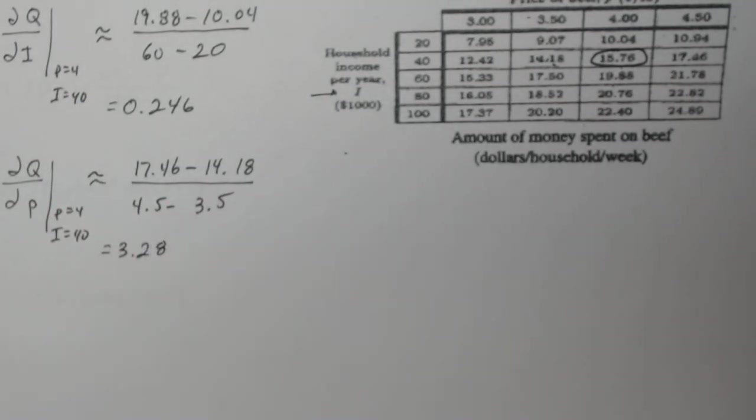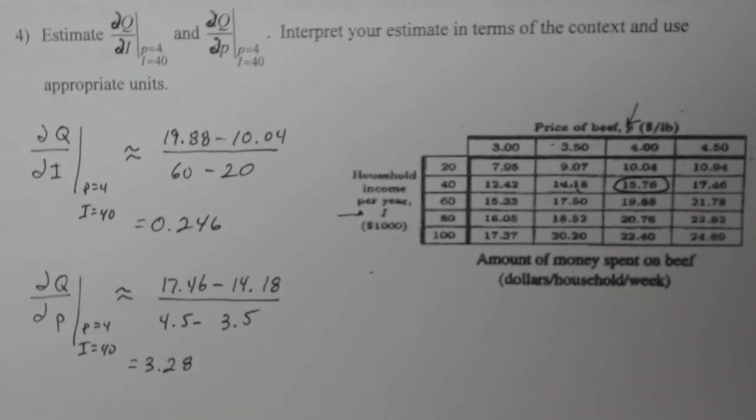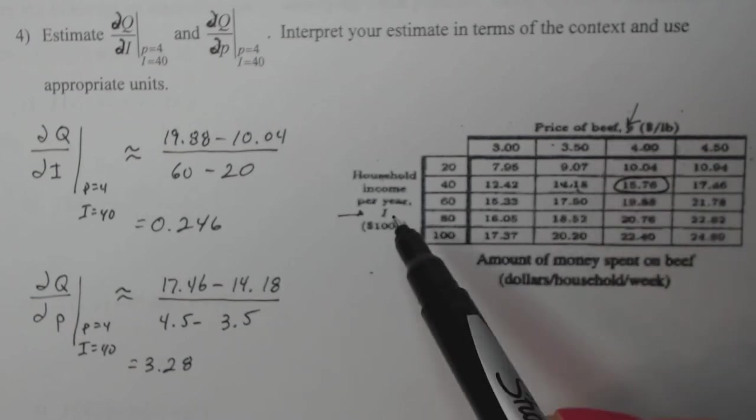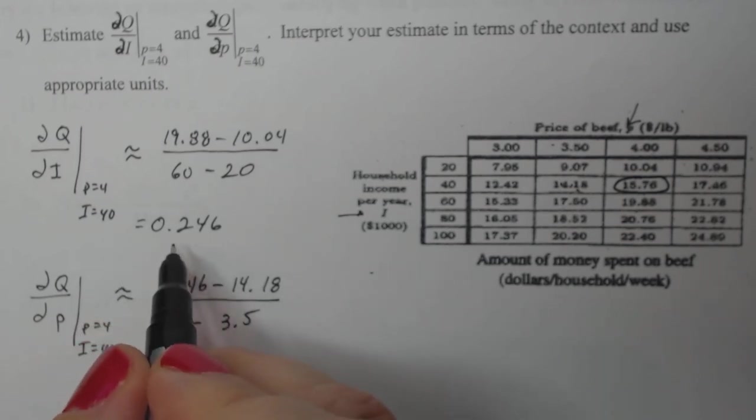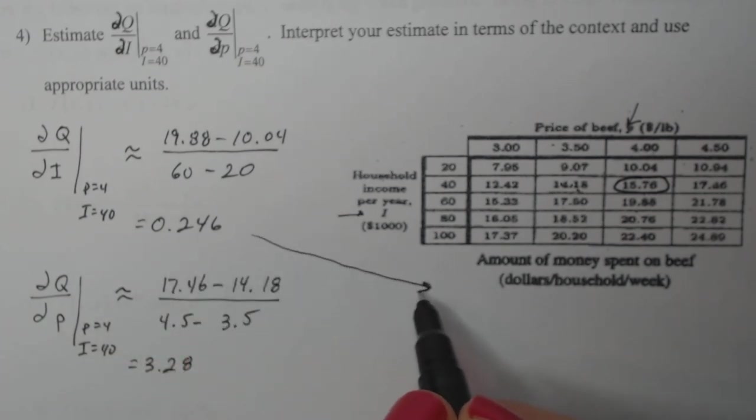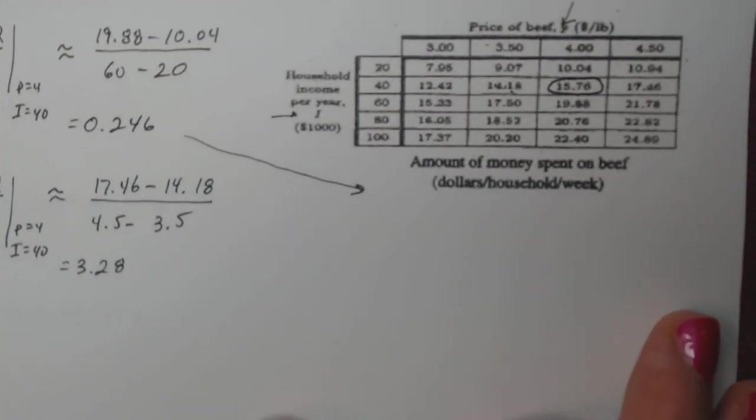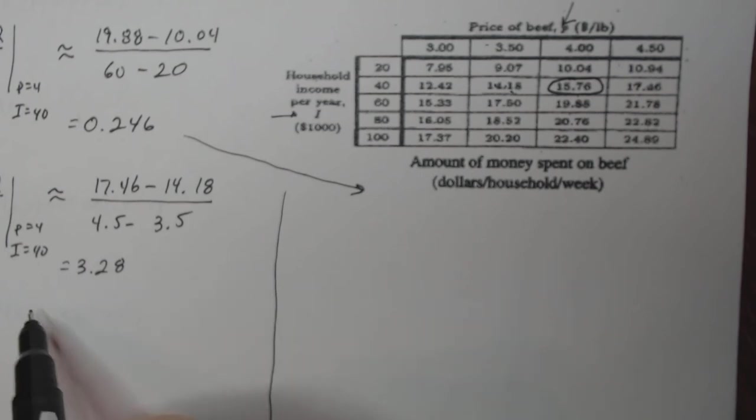Now that's great. I have these numbers, but how do those numbers, what do they mean in terms of price of beef, household income per year, and amount of household spends on beef per week? So we want to actually interpret how we describe those two numbers. So let's start with this guy up here, 0.246. Whenever you do interpretations of rates of change, there are certain things that you always want to have included.